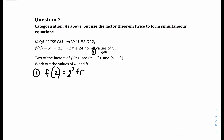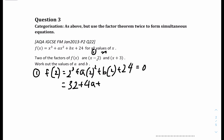Substituting x equals 2: 2 cubed plus a times 2 squared plus b times 2 plus 24 equals 0. That gives 8 plus 24, which is 32, plus 4a plus 2b equals 0. Bringing 32 to the other side and dividing everything by 2 gives equation 1: 2a plus b equals minus 16.